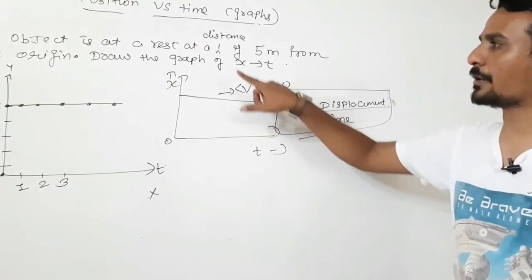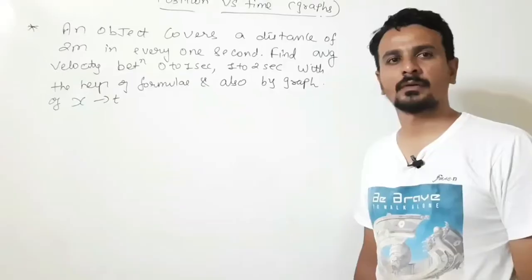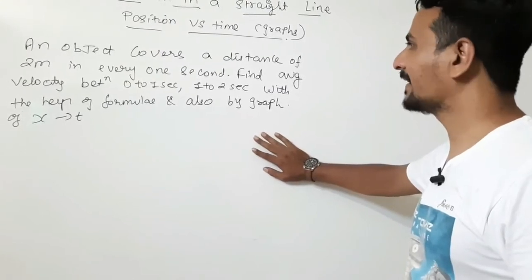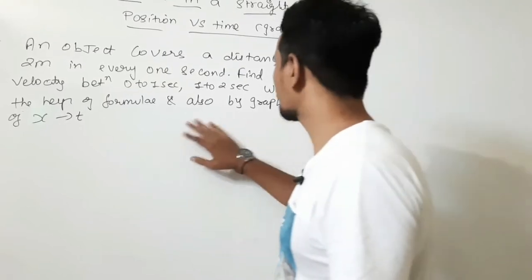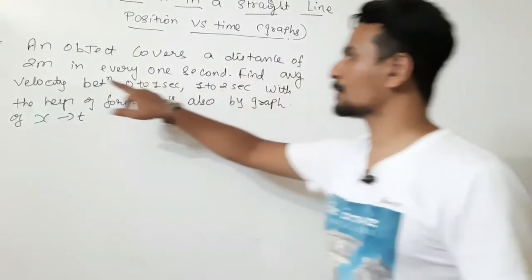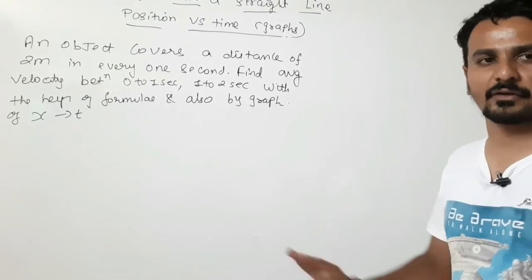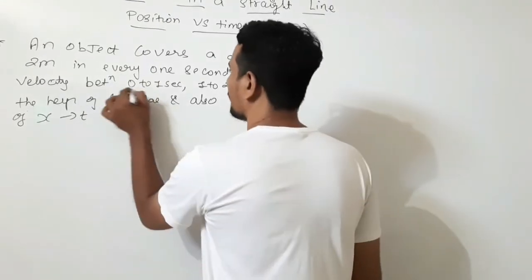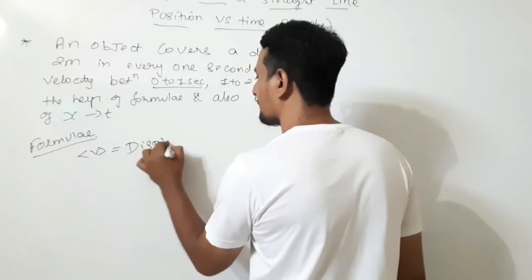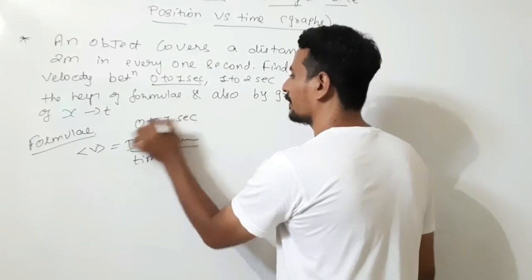Now in the second graph the object will not be at rest — it will be moving. The second situation: an object covers a distance of 2 meters in every one second. Find the average velocity between 0 and 1 second, and 1 to 2 seconds, with the help of the formula and also by the graph of x vs t. The object is traveling a distance of 2 meters in every second, so in the next second it will cover another 2 meters. We will calculate average velocity with the formula first.